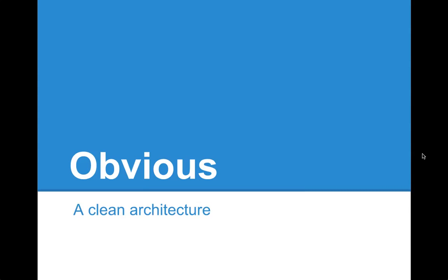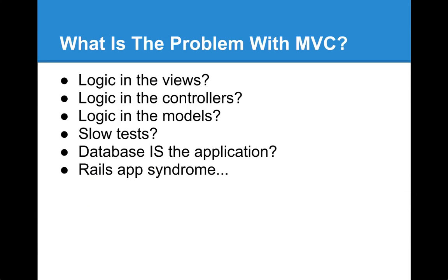Obvious is a clean architecture, as defined by Uncle Bob's posts on clean architecture, or at least it strives to be. And it tries to solve the essential problems with Model View Controller. Model View Controller is a good pattern, it's a useful pattern, it's a popular pattern. But it has some flaws that people seem to run into and haven't really come to grips with yet, in a way that really seems to solve the problems I see with it.